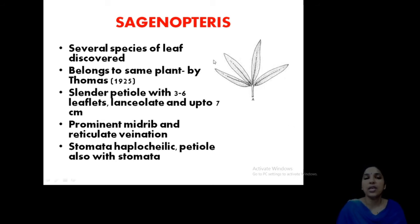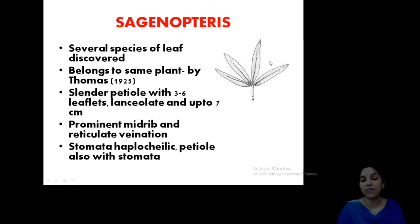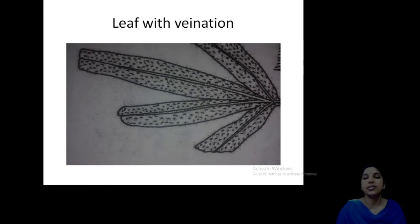Sagenoteris is the leaf. Several species of leaves were discovered, but later it was found that all of them belong to the same plant, as explained by Thomas. The leaf has a slender petiole with three to six leaflets, and they are lanceolate in shape — up to three to seven centimeters in length. Up to six leaflets can be observed on one common axis. A prominent midrib is also visible, and stomata is haplocheilic. The petiole is also having stomata.